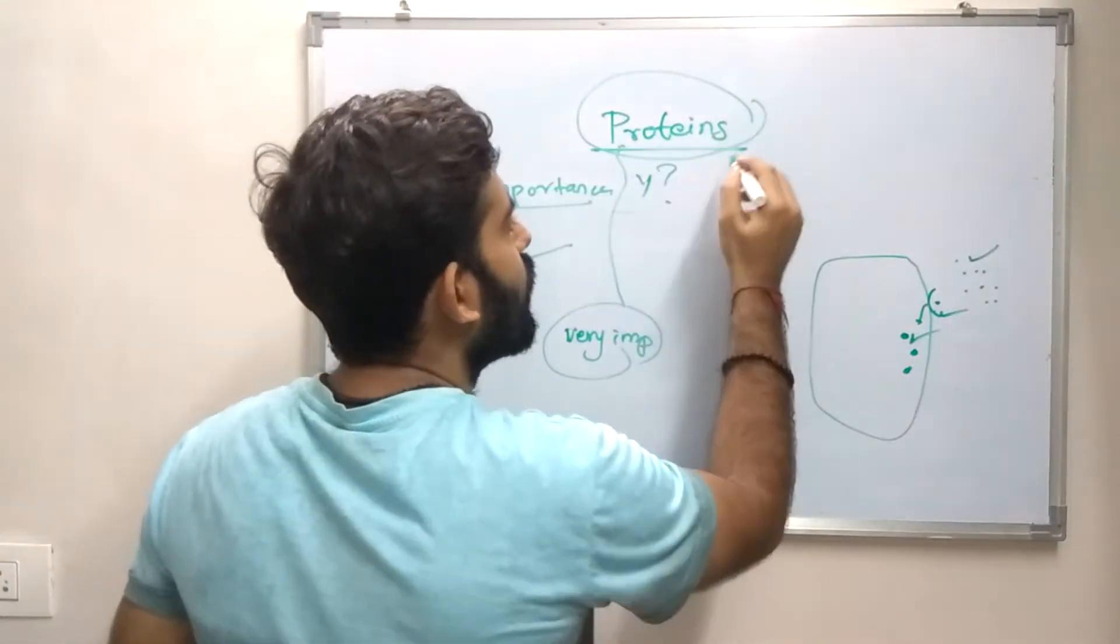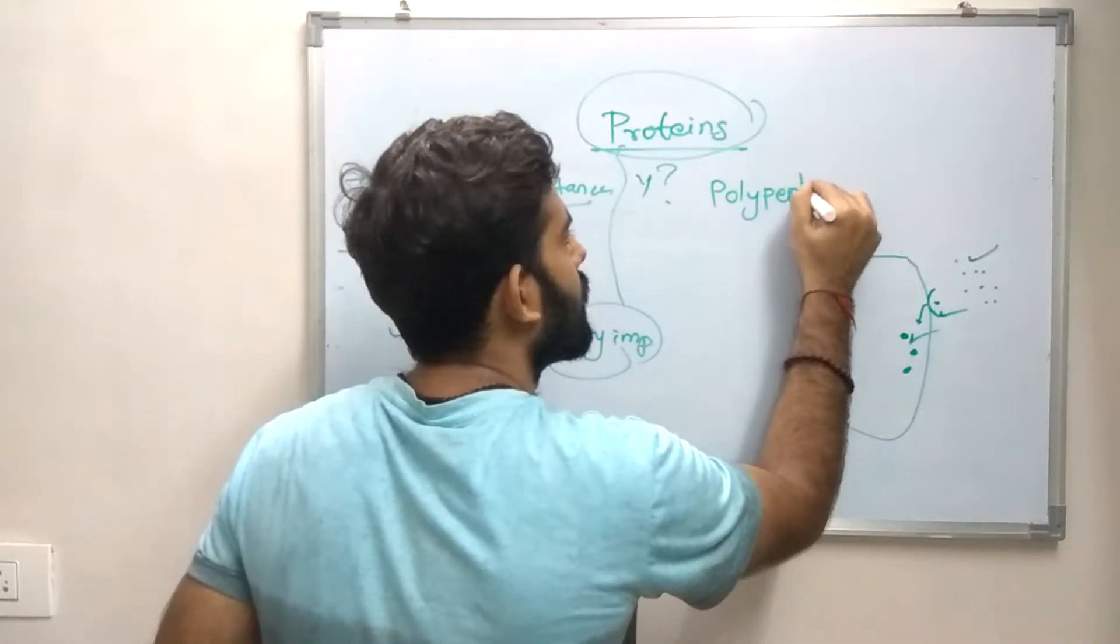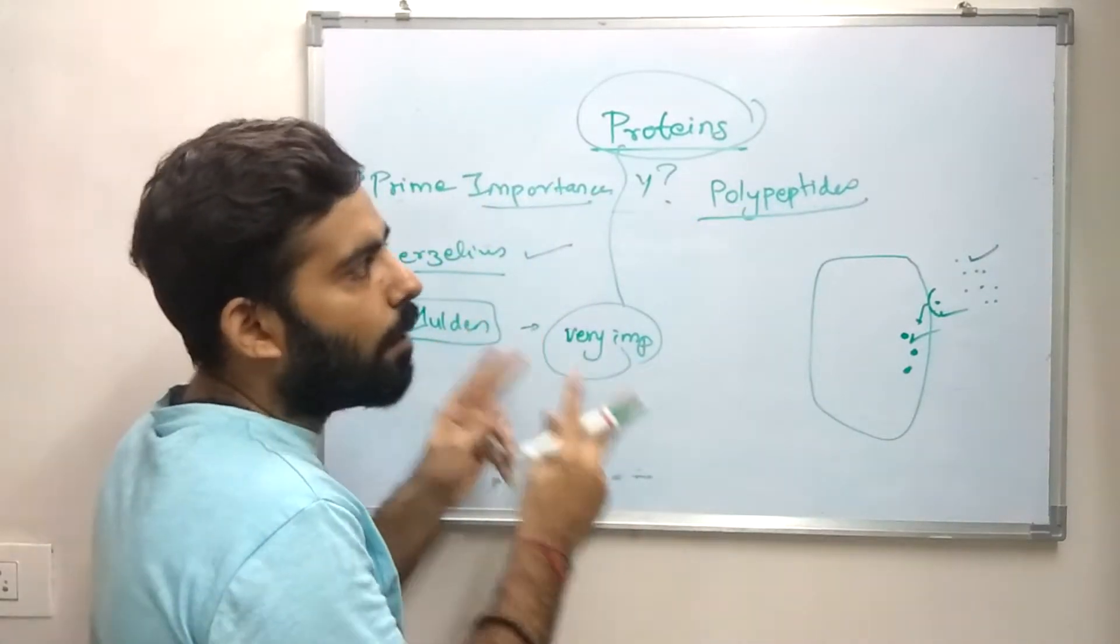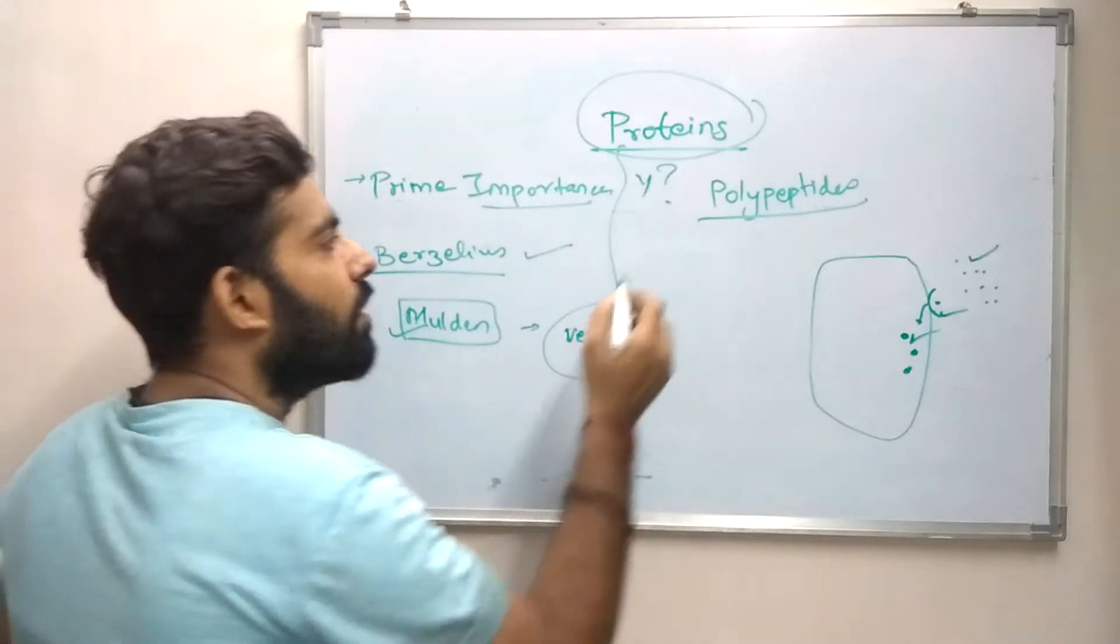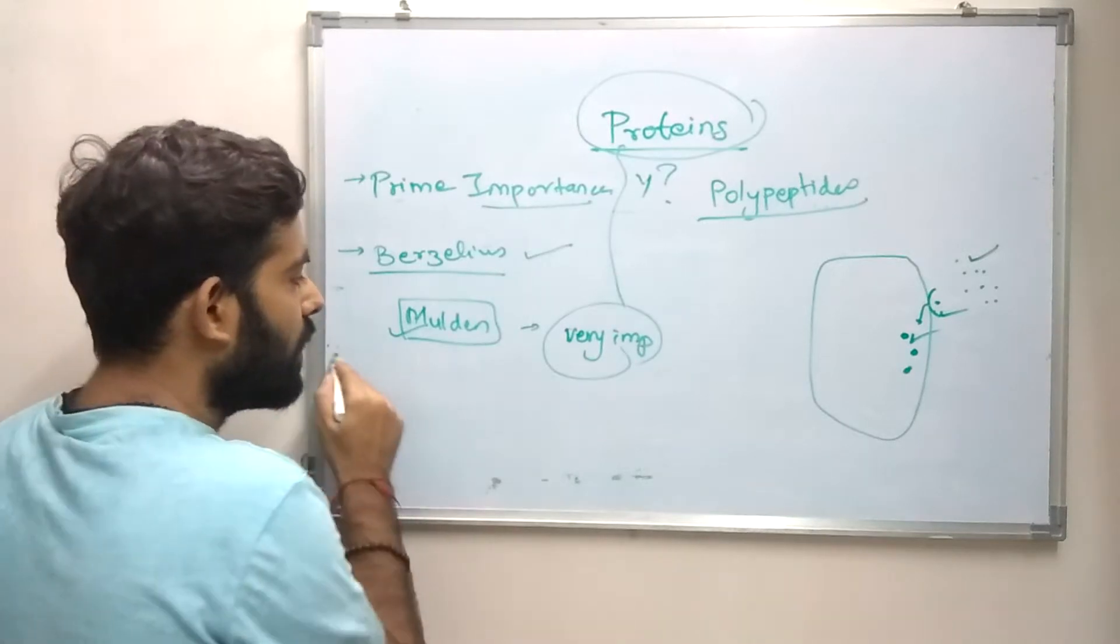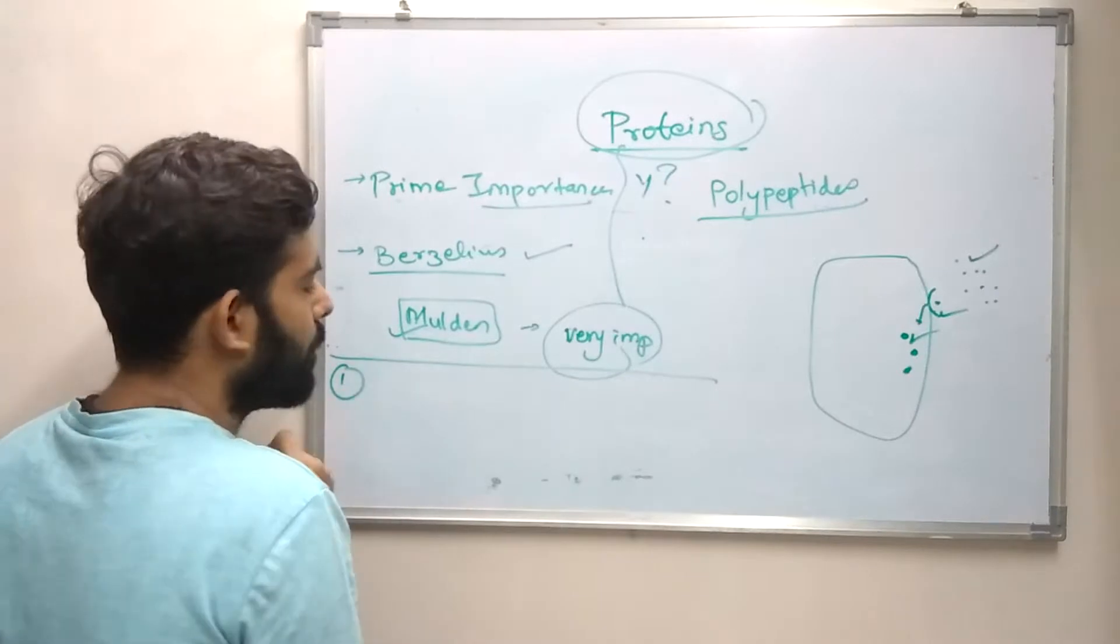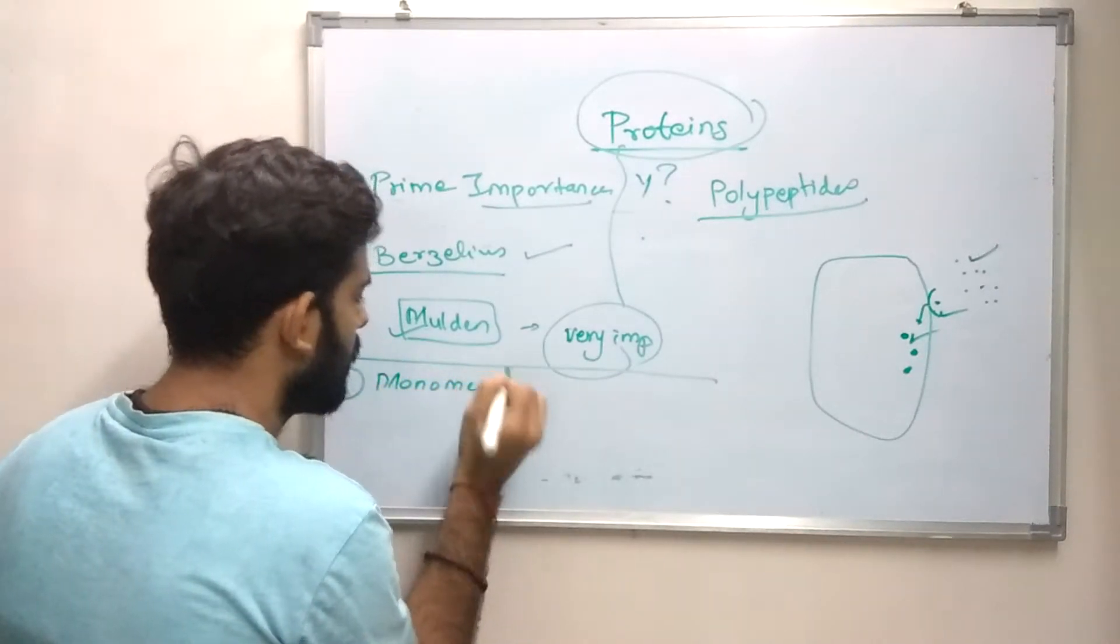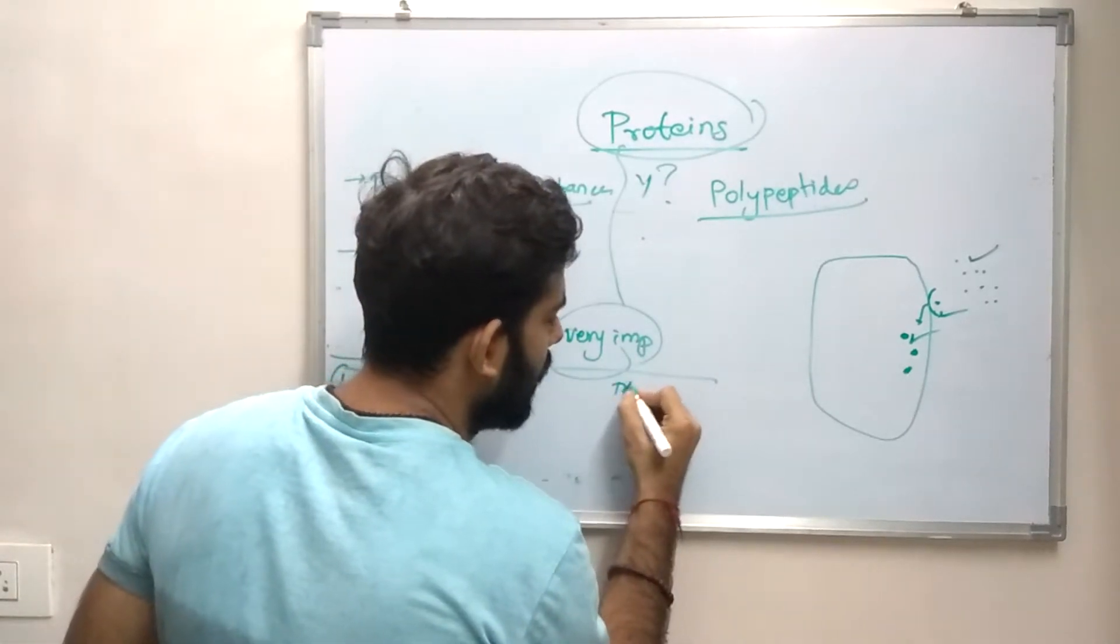Now we all know that proteins are made up of polypeptides, chains of amino acids. Amino acids are linked by peptides so the name polypeptides. Now we can classify proteins on the basis of number of polypeptides. If a protein contains only one polypeptide, it can be said as monomeric. And the proteins containing many polypeptide chains can be called as multimeric.